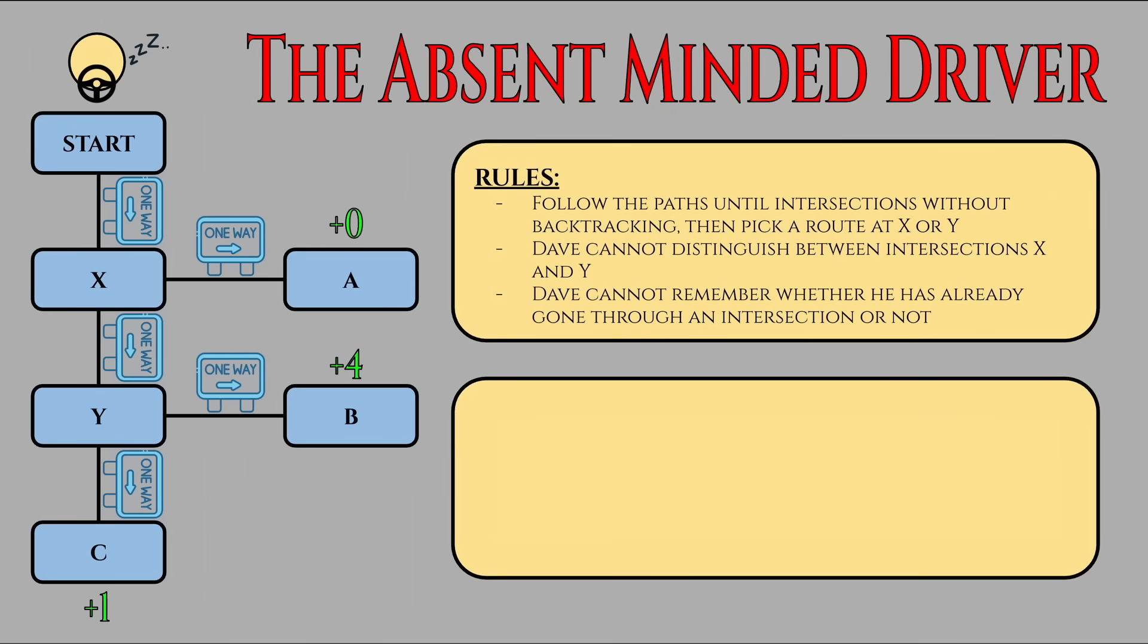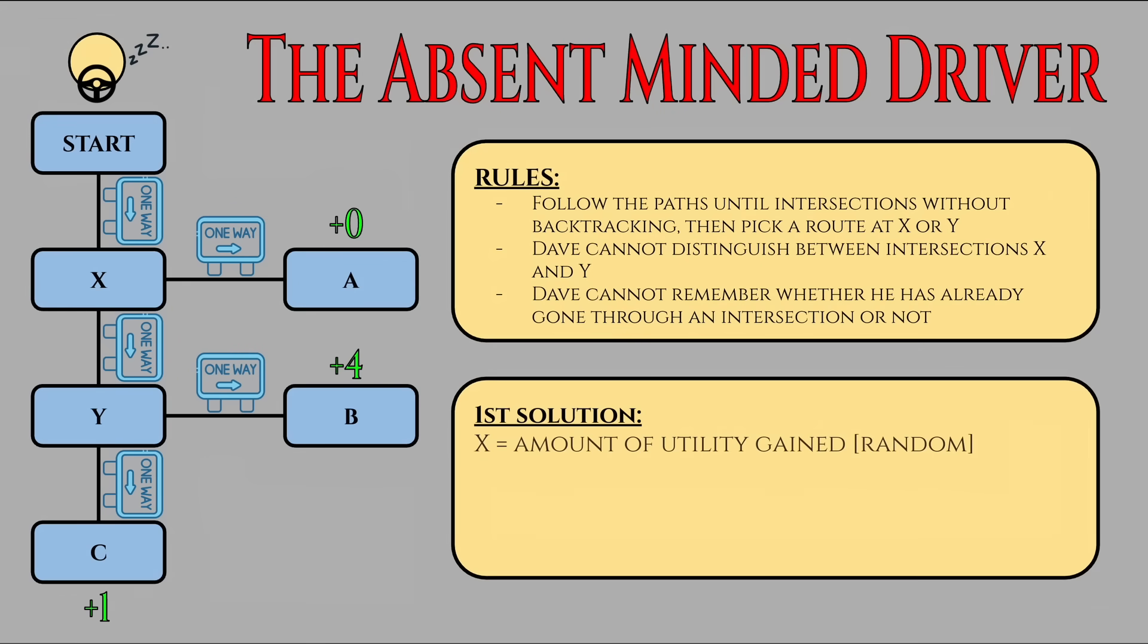Mathematically, let X be the random variable representing the expected amount of utility Dave will get. Then, our expected value is E(X) equals one times P-squared plus four times one minus P times P plus zero times P, which is just equal to 4P minus 3P-squared. Since this is a function of P that is represented by a concave downed polynomial, we can use the first derivative test to maximize this. Taking the derivative of the expression with respect to P and setting it to zero, we get four minus six P equals zero, or P equals two-thirds. This gets an expected utility of four times two-thirds minus three times two-thirds squared, which is equal to four-thirds.